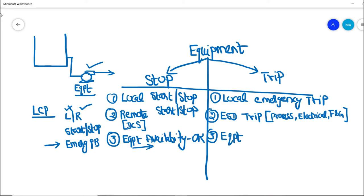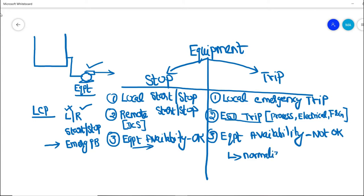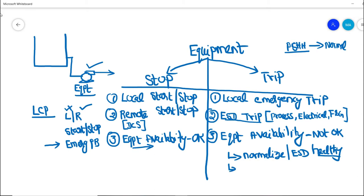In both local emergency push button trip and ESD trip, the equipment availability becomes not okay. If an equipment trips, you cannot start it again without normalizing the ESD trip. There are two things we have to do: first, normalize or make the ESD healthy. For example, if a process high-high initiated the ESD trip, you have to normalize the PSHH to its normal operating condition — then only the ESD trip will become healthy.